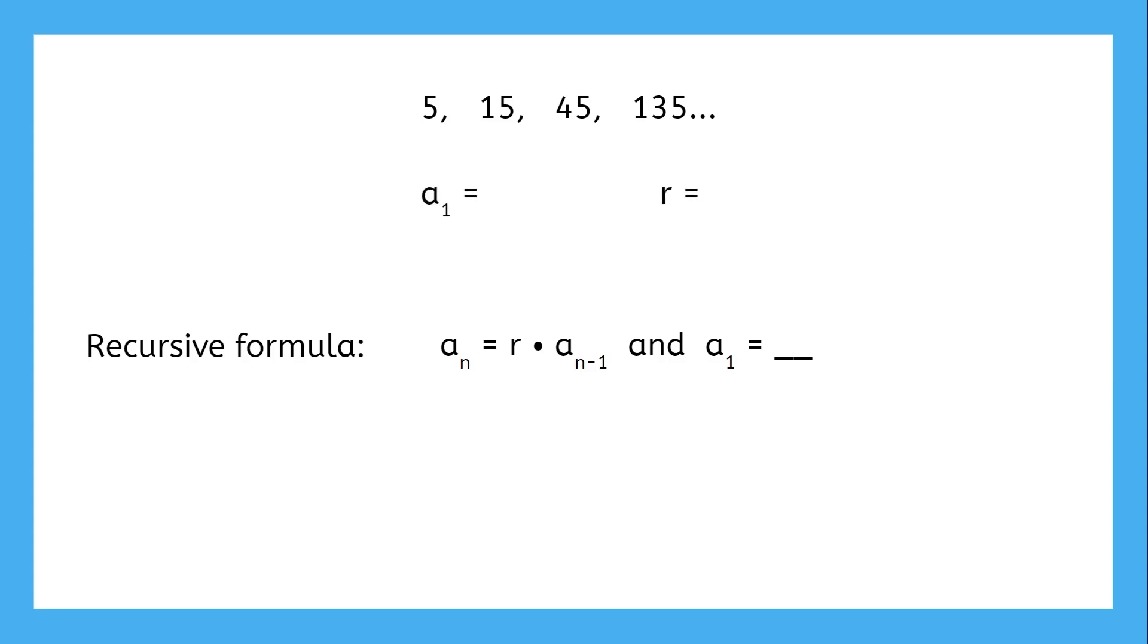The first term for this sequence is 5. The second term divided by the first term gives a ratio of 3, same for 45 divided by 15 and 135 divided by 45. So the common ratio in this sequence is multiplying by 3.